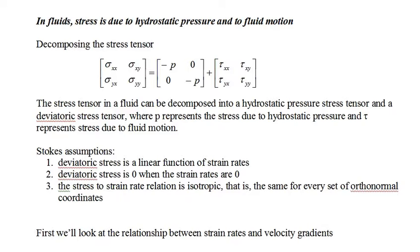For the rest of this video, we will concentrate on the stress caused by fluid motion, called deviatoric stress, and usually represented by tau. There are three assumptions for deviatoric stress: deviatoric stress is a linear function of strain rates; deviatoric stress is zero when the strain rates are zero; and the stress-to-strain-rate relation is isotropic, that is, it's the same for every set of orthonormal coordinates.